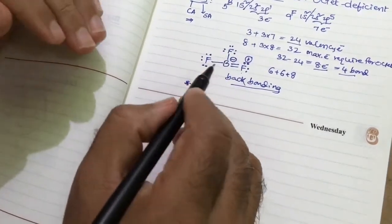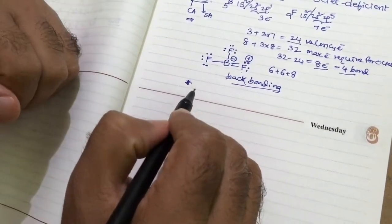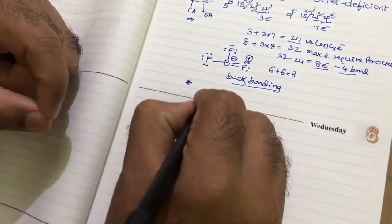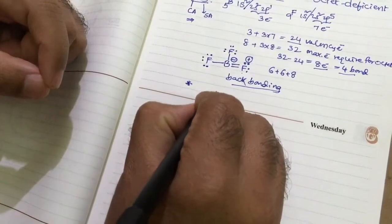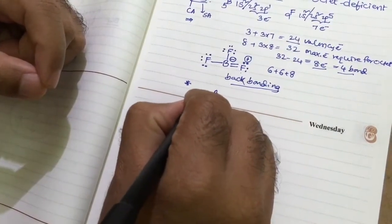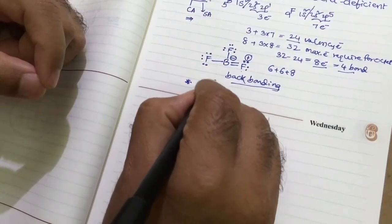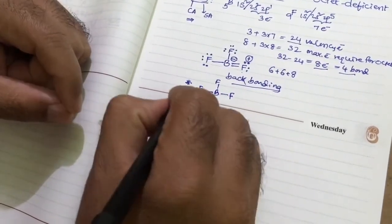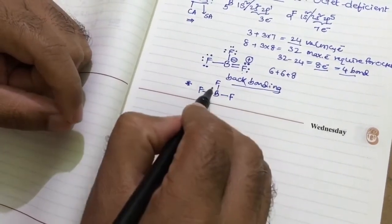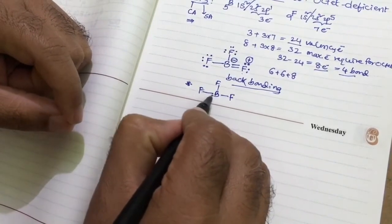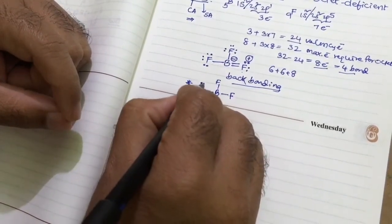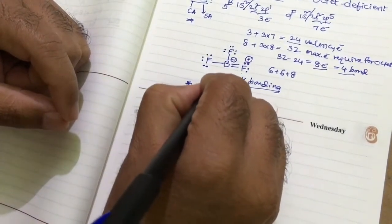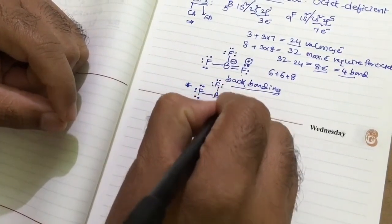Therefore, like this representation, we will not see in any textbooks. Therefore, the actual structure or the experimental evidence shows that this is the exact structure for boron trifluoride. Each fluorine is bonded with a single bond. The remaining electrons are represented like this, 1, 2, 3 lone pairs at each fluorine.